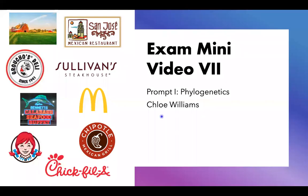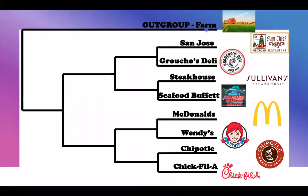Hi, so today I'm going to be doing my seventh exam mini video on phylogenetics. In this video we're going to be talking about these different types of restaurants. Later on I'm going to explain how I got all these phylogenetic trees and how I organized it, but for right now I'm just going to explain some important terms.